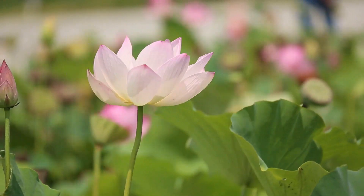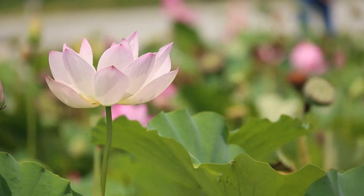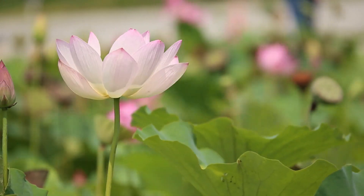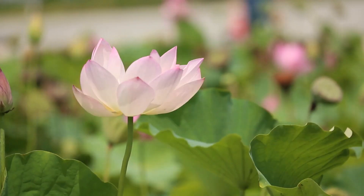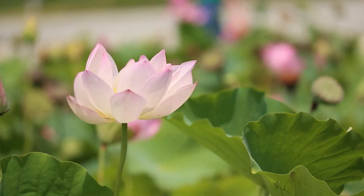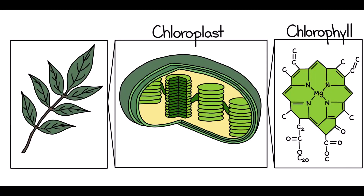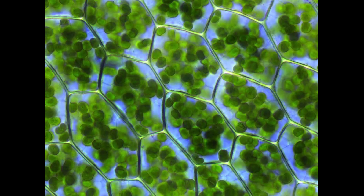Plants gain their coloration from the way that pigments within their cells interact with sunlight. Chlorophyll comprises the most important class of these pigments and is responsible for the green color associated with many types of plants.